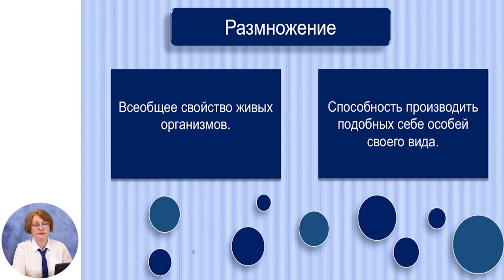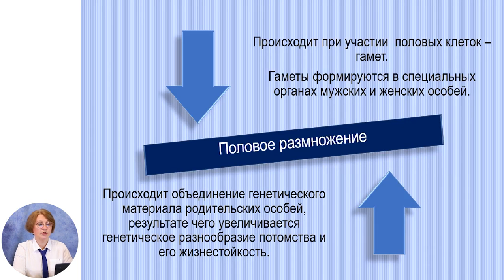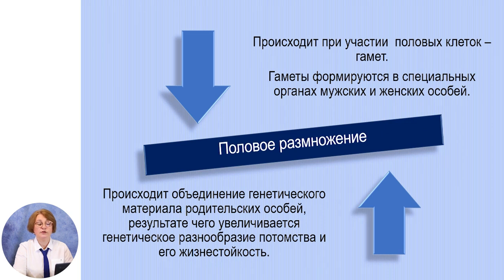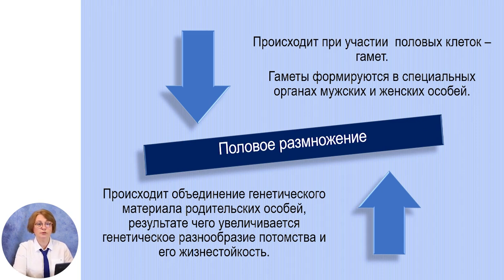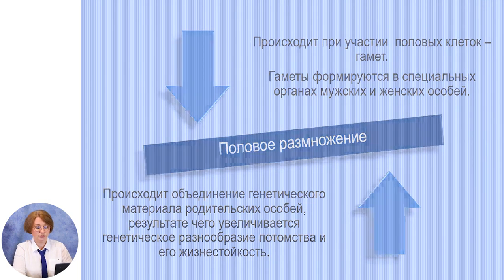Вы уже знаете, что размножение – это всеобщее свойство живых организмов. Размножение – это способность производить себе подобных особей. Половое размножение происходит при участии половых клеток или гамет. Гаметы формируются в специальных органах мужских и женских особей. При половом размножении происходит объединение генетического материала родительских особей, в результате чего увеличивается генетическое разнообразие потомства и его жизнестойкость.